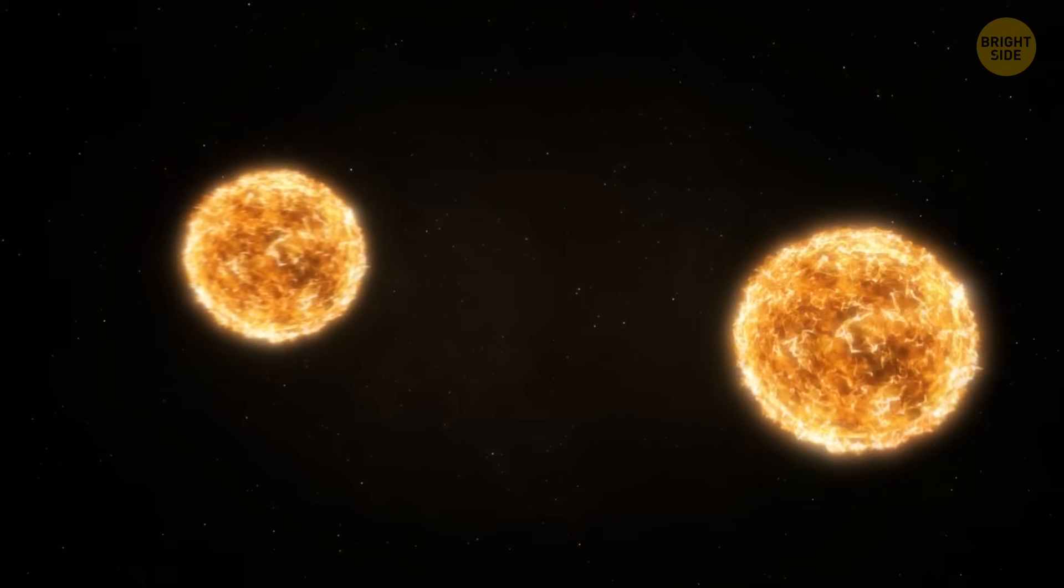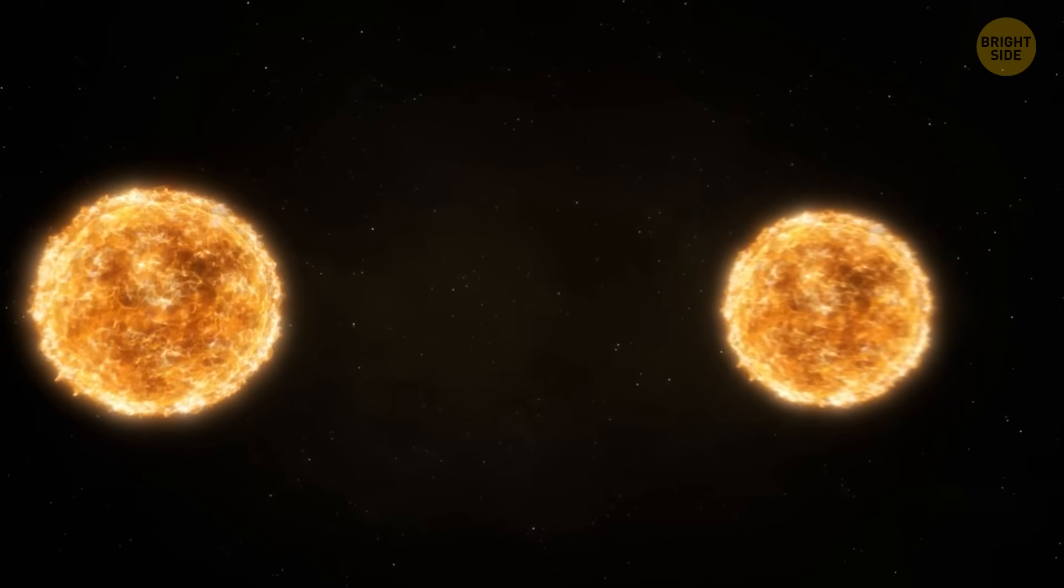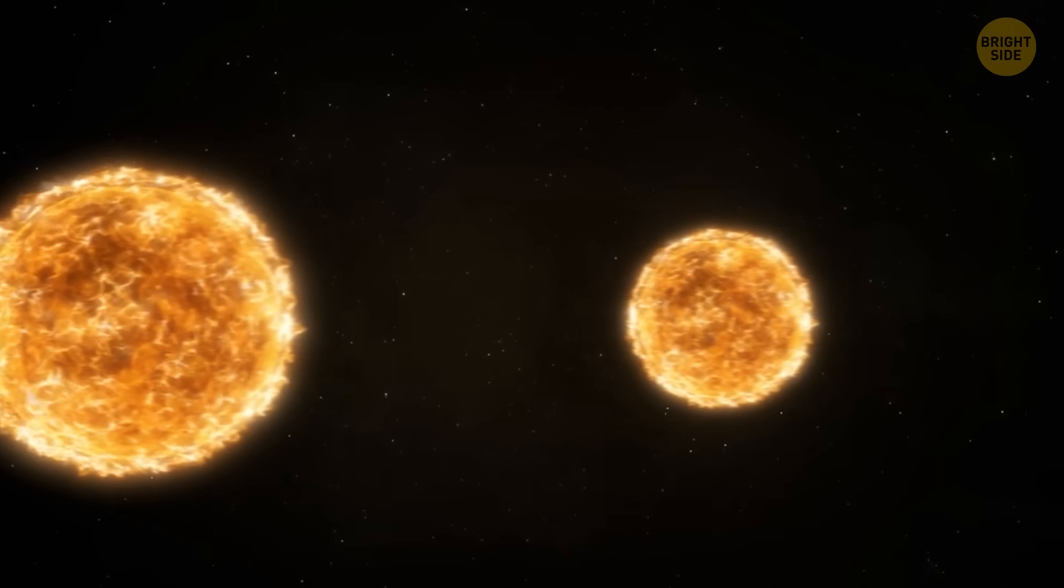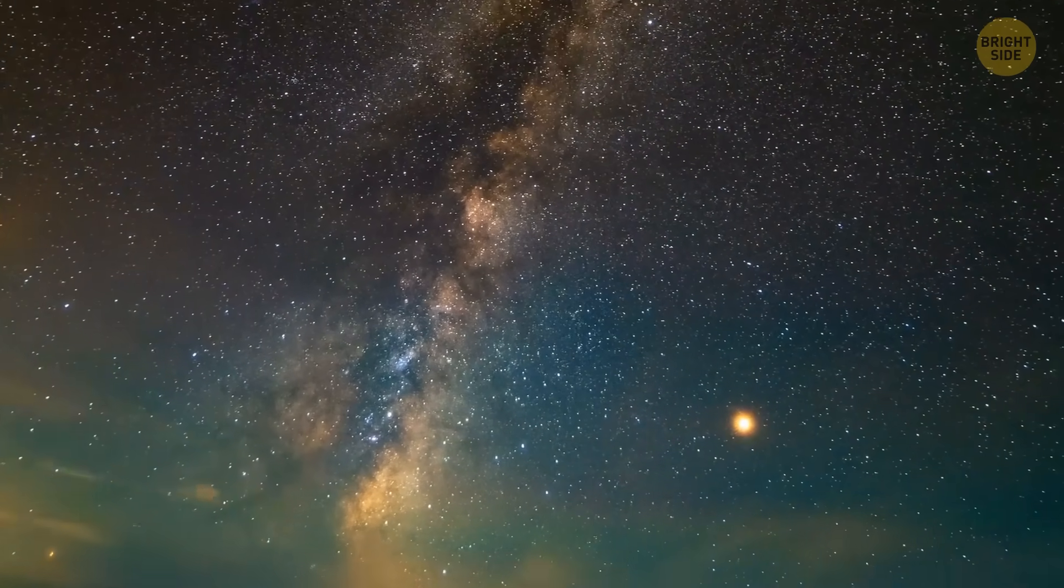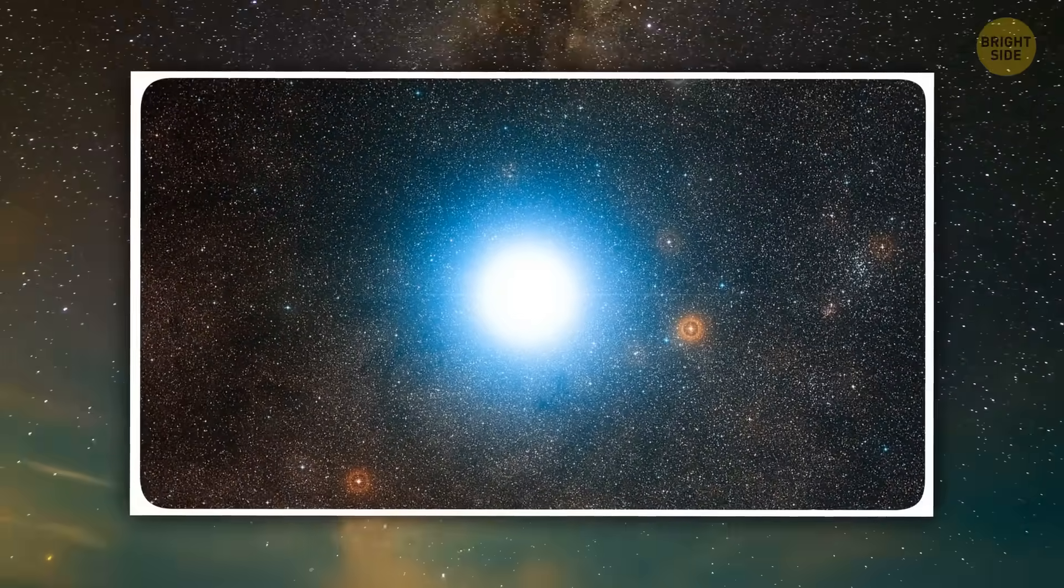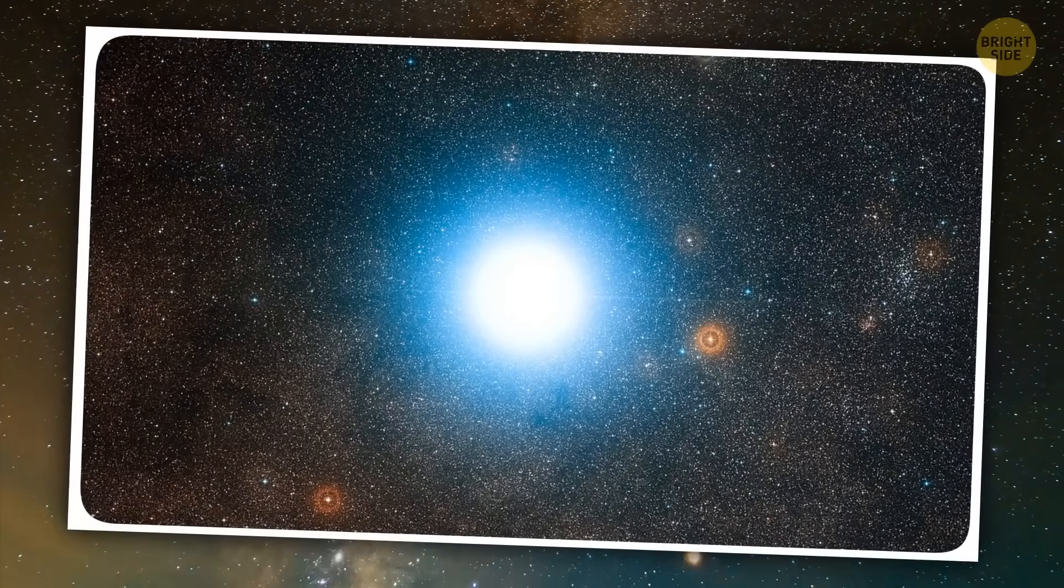For example, binary star systems are very common, consisting of two stars orbiting around a common center of mass. Usually, you can't see them with a naked eye. To an observer on Earth, they'll most likely meld together and appear to be one.